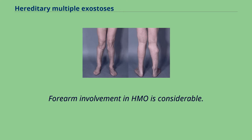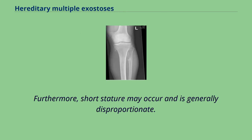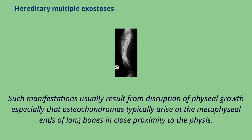Forearm involvement in HMO is considerable. Furthermore, short stature may occur and is generally disproportionate. Such manifestations usually result from disruption of physeal growth, especially as osteochondromas typically arise at the metaphyseal ends of long bones in close proximity to the physis.